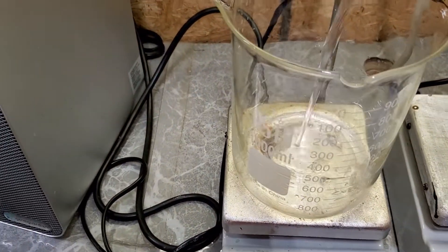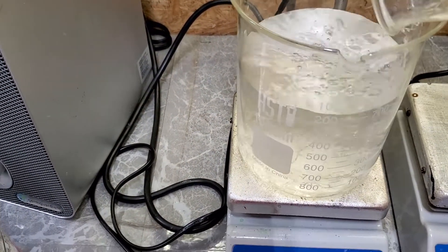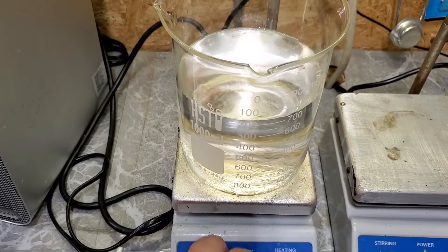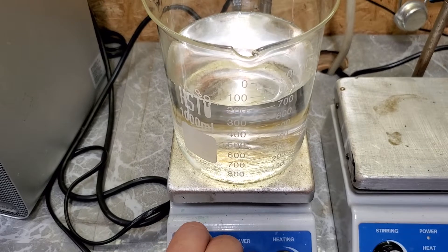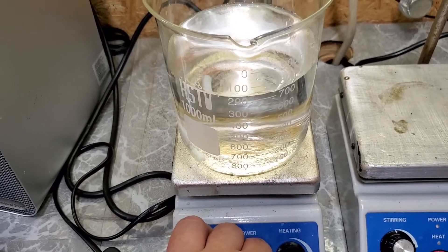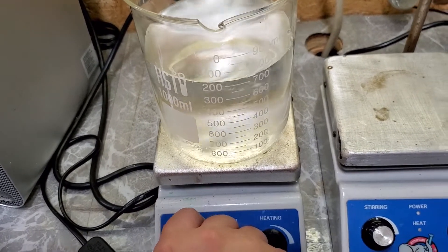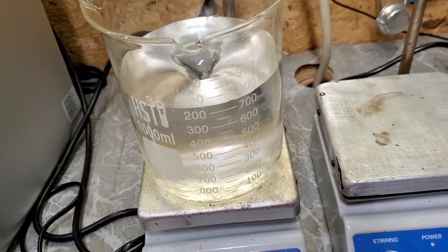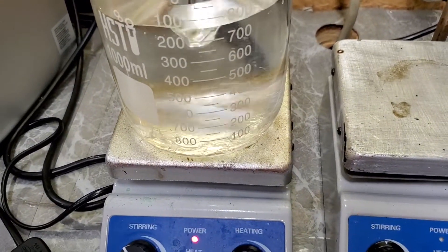Put that back on there with the water and the stir bar. Turn on stirring. Once the stir bar actually gets free from the incredibly viscous corn syrup, there we go. I'm just going to let that stir until everything is incorporated.